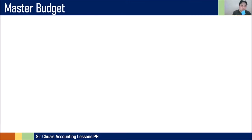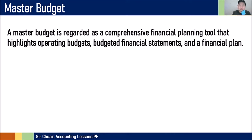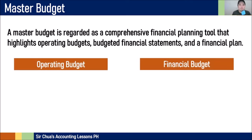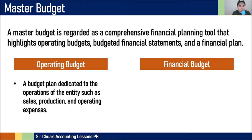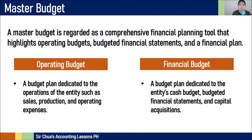Now let's talk about a master budget. A master budget is a comprehensive financial planning tool that highlights operating budgets, budgeted financial statements, and financial plans. It is composed of two major components: the operating budget and the financial budget. The operating budget is dedicated to all of our sales, production, and operating expenses — operationally — which leads to the creation of your budgeted income statement. The financial budget is dedicated to the cash budget, budgeted financial statements, and any related capital acquisitions.